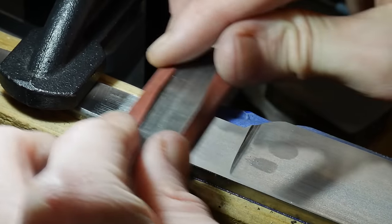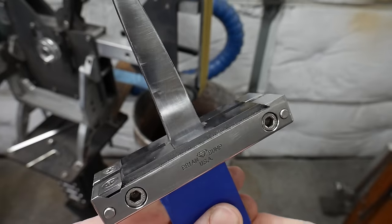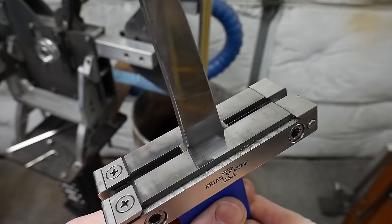After everything is up to a 600 grit finish I reinstall the file guide and clean up the shoulders on the flat platen.